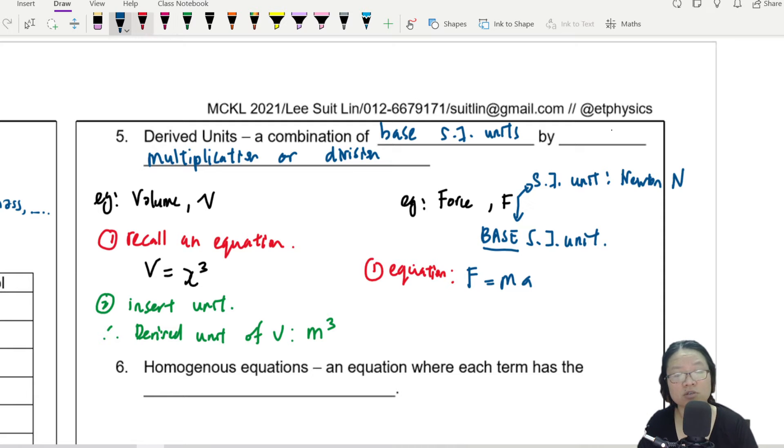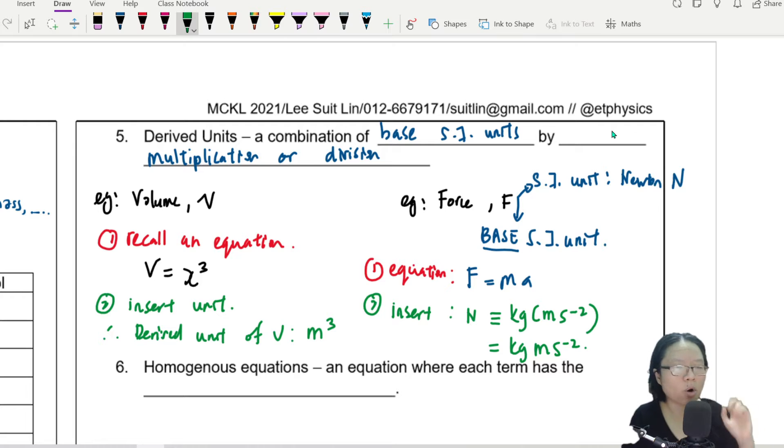And then you may be thinking, okay, so if F is equal to MA, then I can insert unit. So I'm going to change color and do the insertion now. So the unit for Newton is equivalent to, unit for mass is kg, unit for acceleration is meter per second square. So this will be equivalent to kg ms negative two.